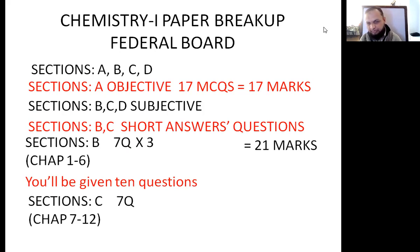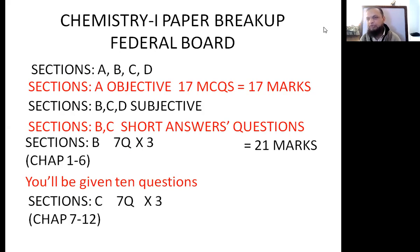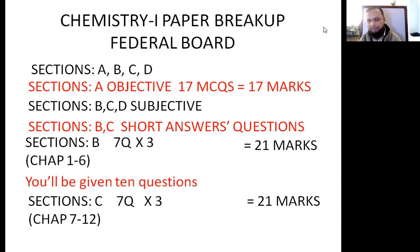Section C is from chapter number seven to chapter number twelve, that is the rest half of your book. You will have to attempt seven questions and one question is again of three marks, so it makes 21 marks for this section also. You will be given ten questions again, with a choice of three extra questions in this section.